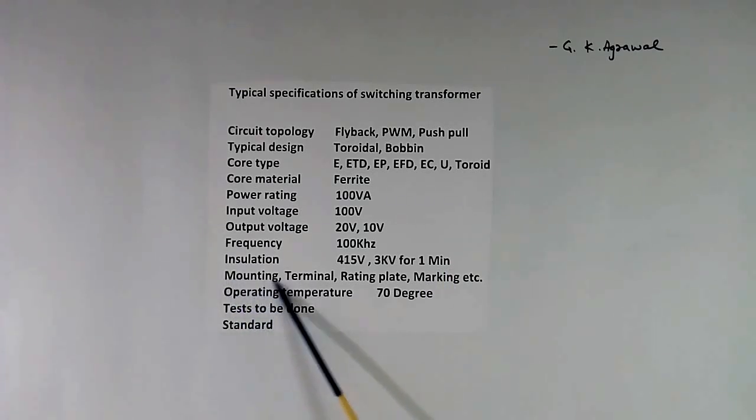Then mechanical arrangement, we have to tell, like mounting, terminals, rating plate, marking. Then operating temperature, we have to write, like 70 degree. 70 degree is applicable for industrial grade application. It can be more or less also.